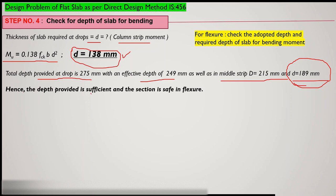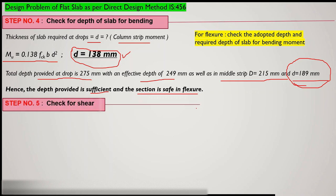Since the depth provided exceeds the required depth, the section is safe in flexure. Step 5 is the shear check. Since flat slabs have no beams and are directly supported by columns, there is a risk of punching shear where the column may punch through the slab. We must verify the provided depth can resist the expected punching shear.